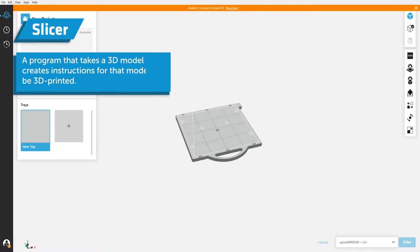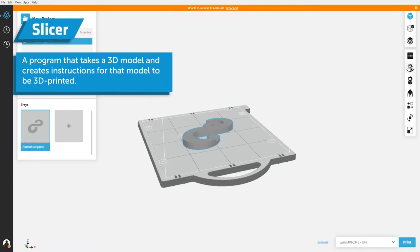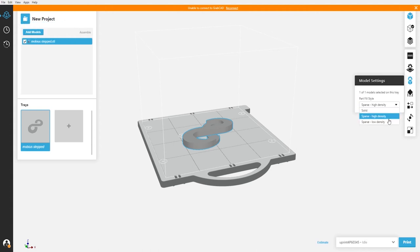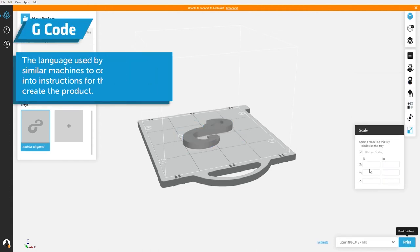Once you have your design, you have to bring it to another program before you can send it to be printed. This intermediate program is called a printer utility or a slicer. The slicer is a program that reads a 3D model and converts it into instructions that a printer can read. These instructions are written in G-code, which is just a way of instructing the printer how to create the product.